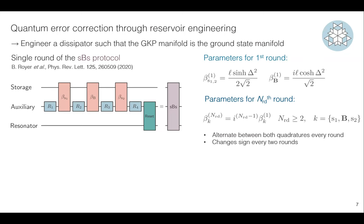If you take the limit of delta going to zero, the big displacement becomes a controlled displacement by one lattice parameter, and the small displacements go to zero — these are finite energy corrections through simple measurement of the stabilizer. For a subsequent round, you multiply these numbers by i, which naturally alternates the stabilizer between both quadratures, stabilizing X, P, and so on. After two rounds you accumulate a minus sign, which symmetrizes relaxation events, so any auxiliary relaxation event cannot lead to a logical error.